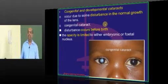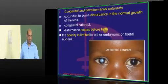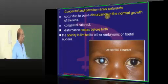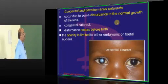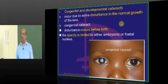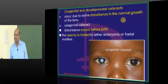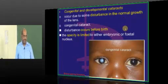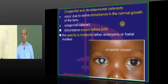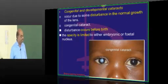Congenital and acquired are the two broad classes. Congenital and developmental cataracts typically occur because of a disturbance in the growth of the lens during intrauterine life — that is called congenital cataract. After birth there can also be a disturbance, and then you call it developmental cataract.